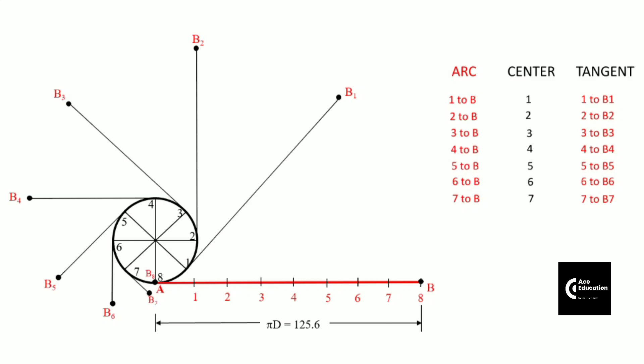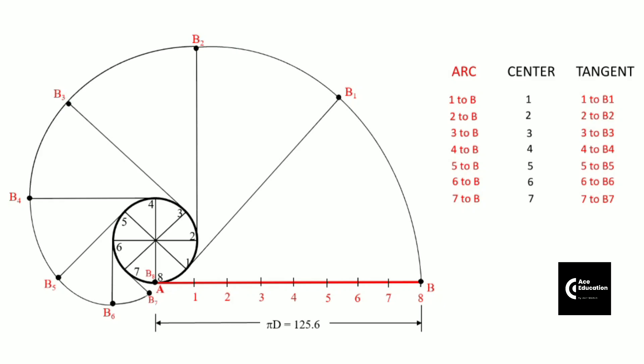Once you have all these points, it's time to draw a smooth curve passing through all of them. You can draw this curve starting from point B through B1, B2 and so on, or in reverse order from B8 to B7, B6, and so on. This curve is called the envelope of a circle. I hope this video helped you understand how to draw the envelope of a circle. Thank you.